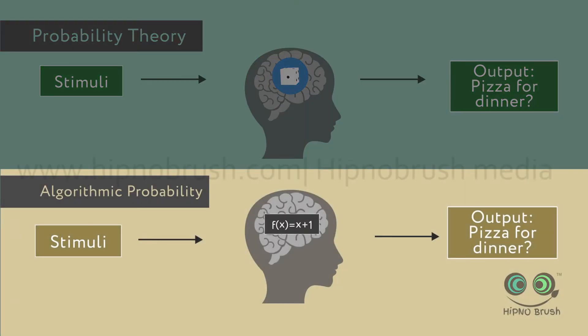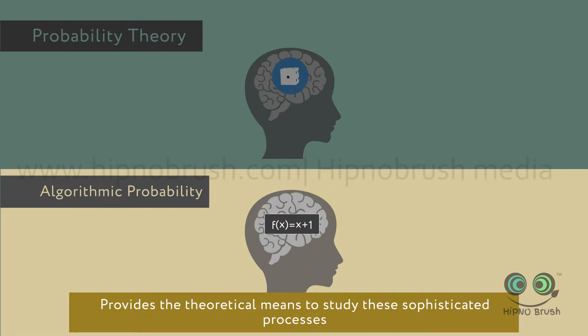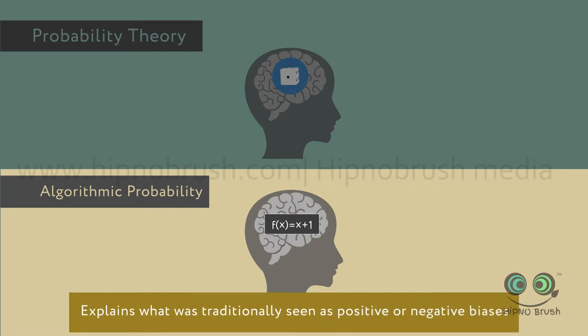However, the theory of algorithmic probability applied to human and animal cognition provides the theoretical means to study these sophisticated processes and even explains what was traditionally seen as positive or negative biases in terms of the choices that a mind takes.